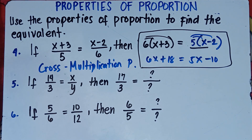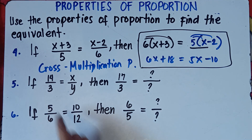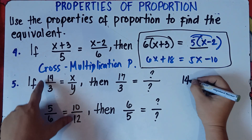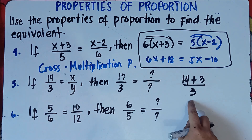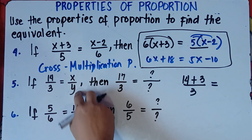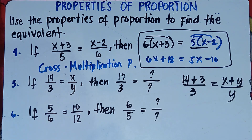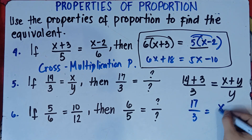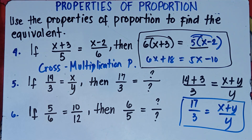Number 5: if 14 over 3 equals x over y, then 17 over 3 equals what? From 14 it becomes 17 — that's 14 plus 3, the numerator plus the denominator. We apply the addition property. So the answer is x plus y over y. 14 plus 3 is 17, so 17 over 3 equals x plus y over y. That's the answer for number 5, addition property.